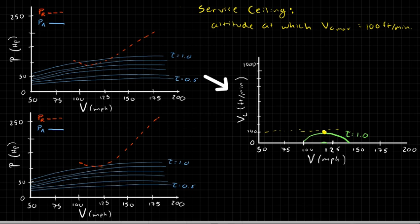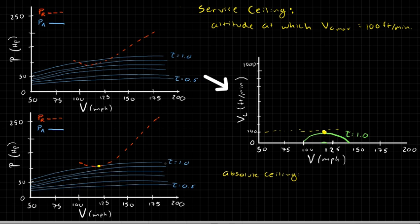There's one other important point — where we cannot climb at all. This is the absolute ceiling for the aircraft, and I should specify this means the airframe and power plant combination. If you put a more powerful power plant on an airframe, you can raise the absolute ceiling. Alternatively, lowering the power required through aircraft design can also raise both the service ceiling and absolute ceiling. The absolute ceiling is the altitude at which V_C max equals zero feet per minute — you cannot climb beyond that point.